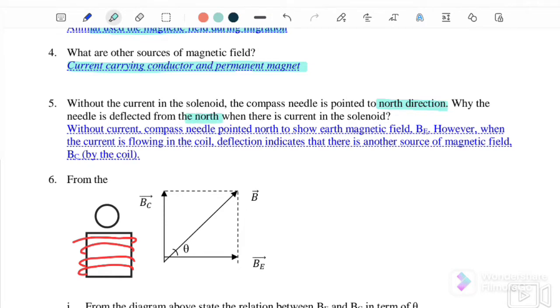Without current, the compass needle points north to show the Earth's magnetic field. However, when the current is flowing in the coil, deflection indicates that there is another source of magnetic field by the coil.